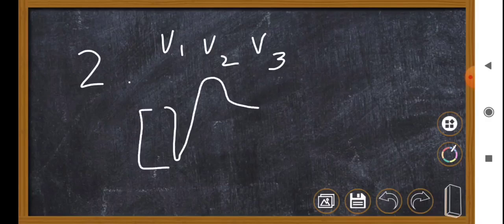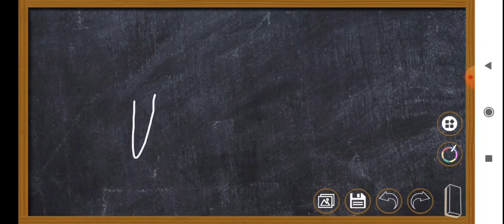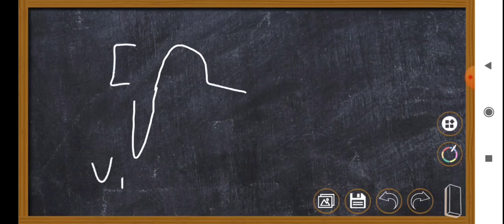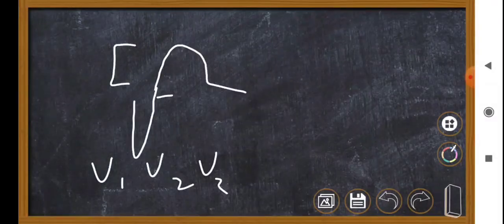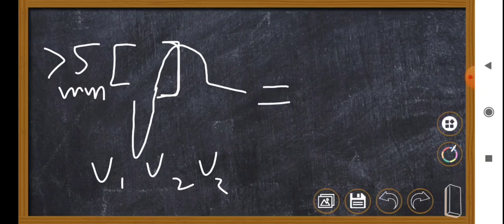To illustrate: in leads V1, V2, or V3, the usual pattern shows discordant ST segment elevation as part of LBBB. However, if instead there is an S wave followed by ST depression, that is given three points. The third parameter is discordant ST elevation greater than five millimeters. Although some ST elevation is already a feature of LBBB in these leads, if it exceeds five millimeters it may indicate ongoing ischemia and is given two points.